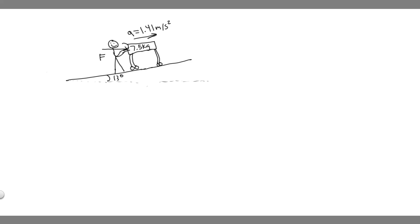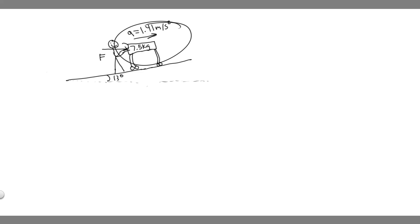The first thing, as usual, is to draw what's going on. So we have this person pushing this cart, which is 7.5 kg, and we know it's going up a 13 degree incline. We also know we want to accelerate it at 1.4 m per second squared, and what we're trying to find is the magnitude of this horizontal force F that they're pushing with.